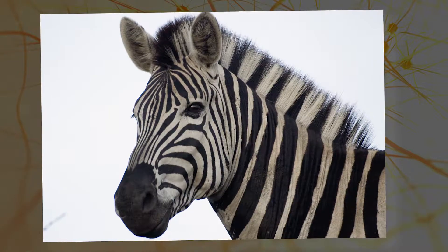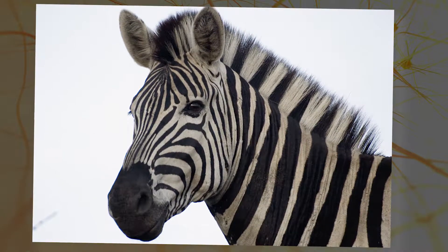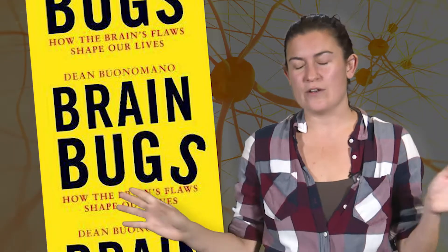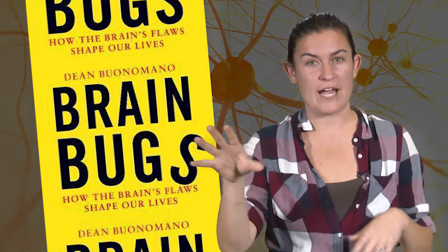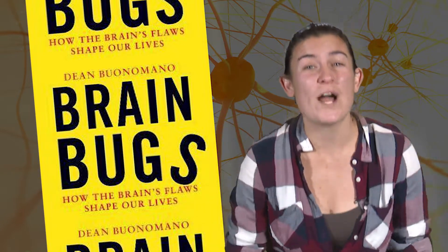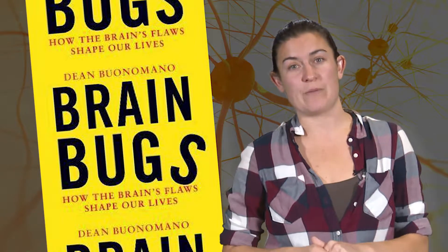So when asked this series of questions, 20% of people will actually answer zebra. But when asked to name an animal just randomly without the questions about Africa and black and white in front of it, less than 1% of people will name a zebra as their animal.